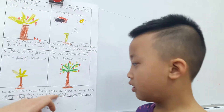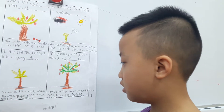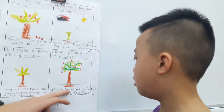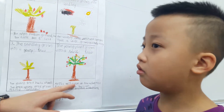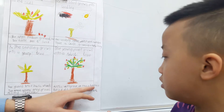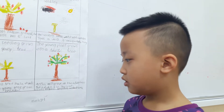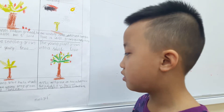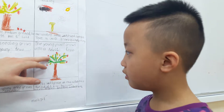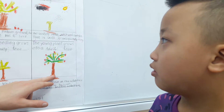And then finally we have an adult tree. Good. And what will grow on the adult tree? What does an adult tree have? It has roots. Roots — what else? Good, and a trunk.